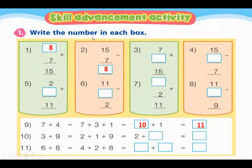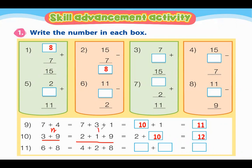Number 10: 3 plus 9. You can write this as 2 plus 1 plus 9. That equals 12. So 2 plus 1 plus 9 is 12, and 10 plus 2 is also 12. The answer is 12. You have to find a number that when added gives the result of 12.